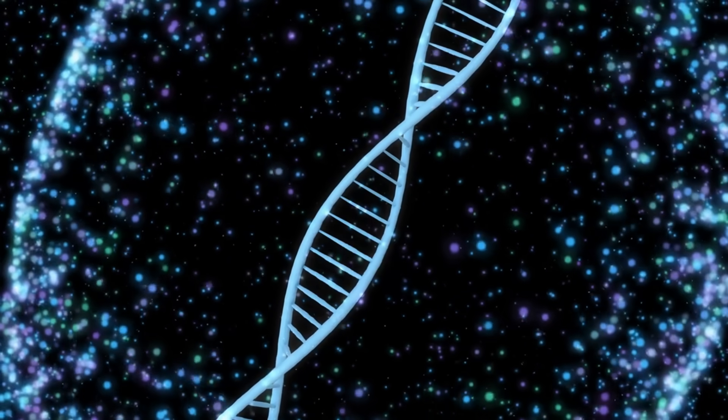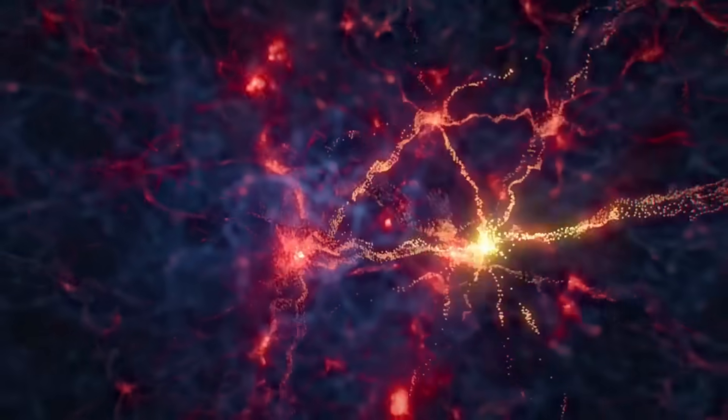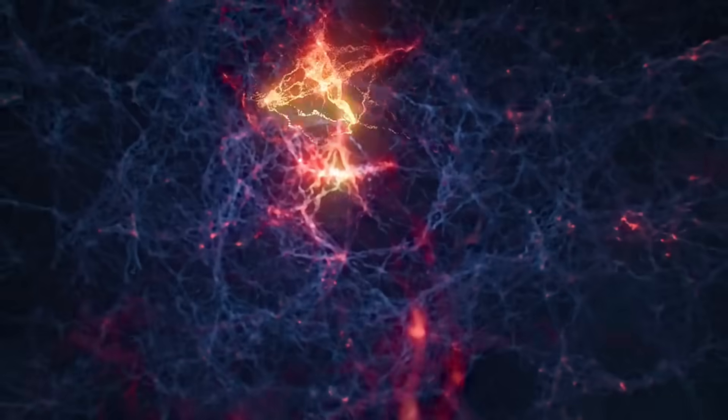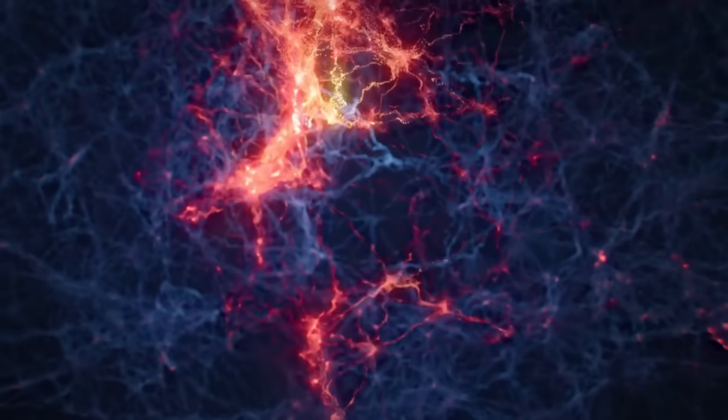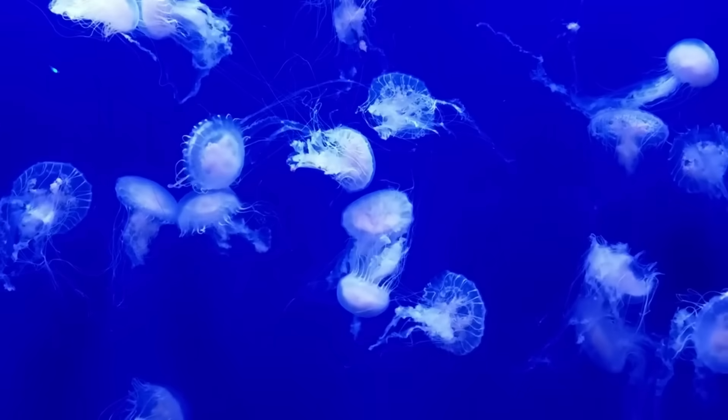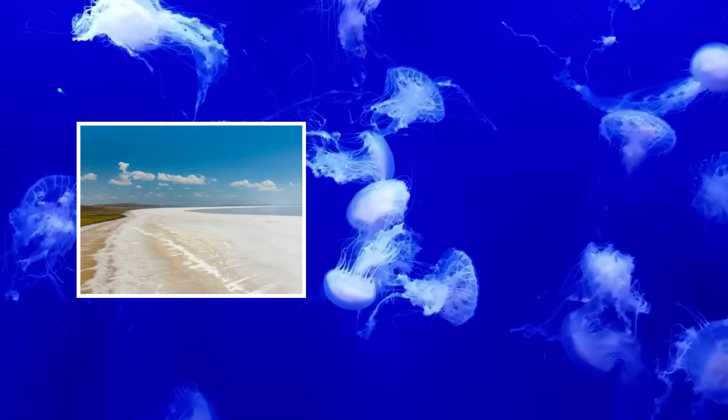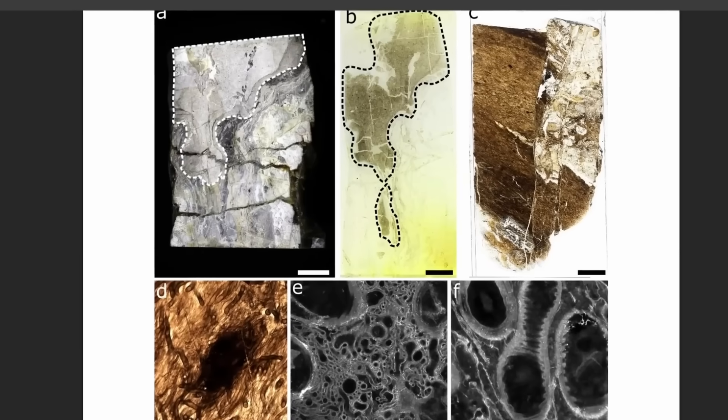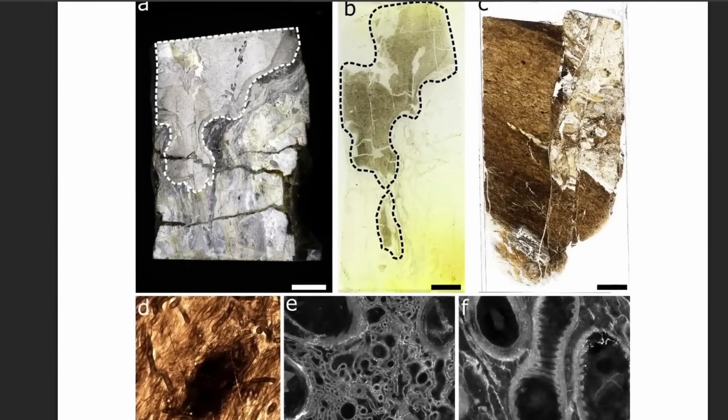Where does this genetic dark matter come from? Much of it originates in extreme environments that push the boundaries of what we consider habitable. Deep ocean crusts. Hypersaline lakes. Scalding hydrothermal vents. Places that might harbor life so different from what we know that our conventional tools can't even recognize it.